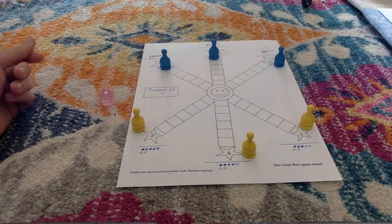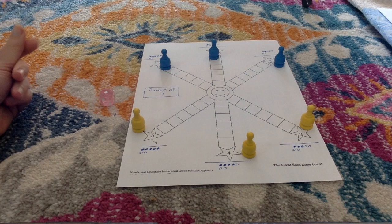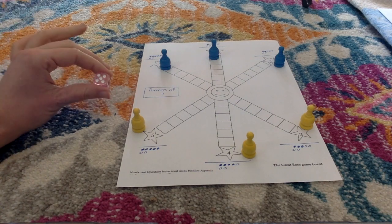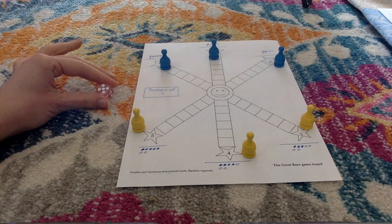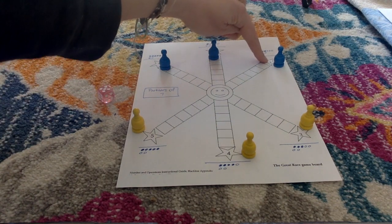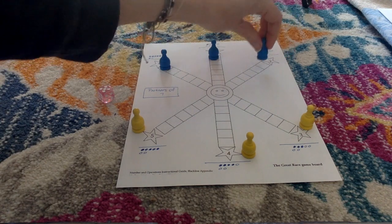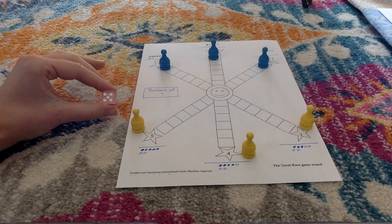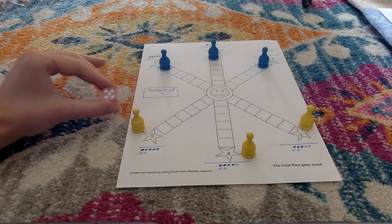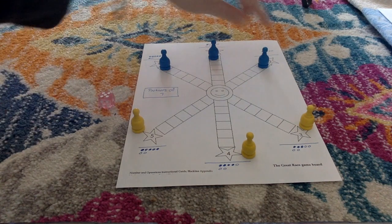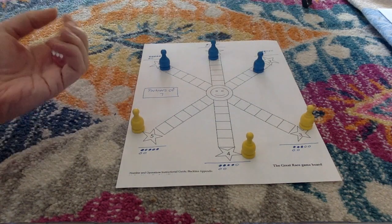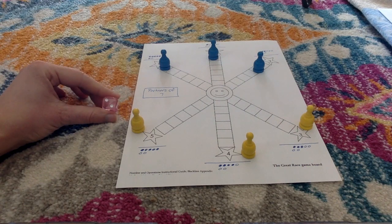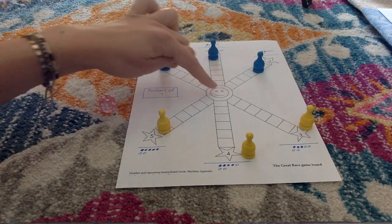Back to the first player's turn. Five. Five plus two is seven. The game continues. Five plus two equals seven. So eventually one player gets to go to the middle.